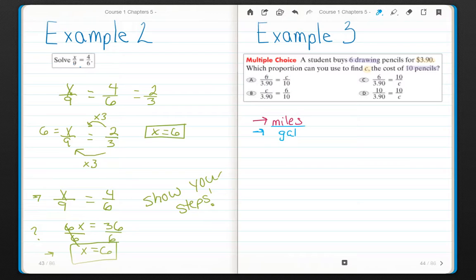Well, 6 pencils and 10 pencils, those are both the same. Those should both be in the numerator. So my answer is not A. Here we have cost of 10 pencils over $3.90. Equals 6 pencils over 10 pencils. But that's not correct either because we have to have two different units in our fraction. So it's not B either.